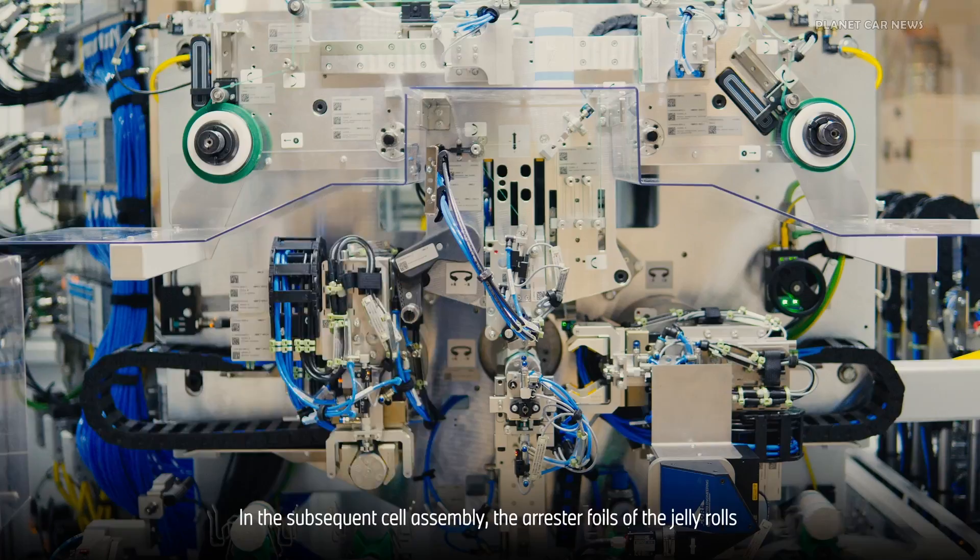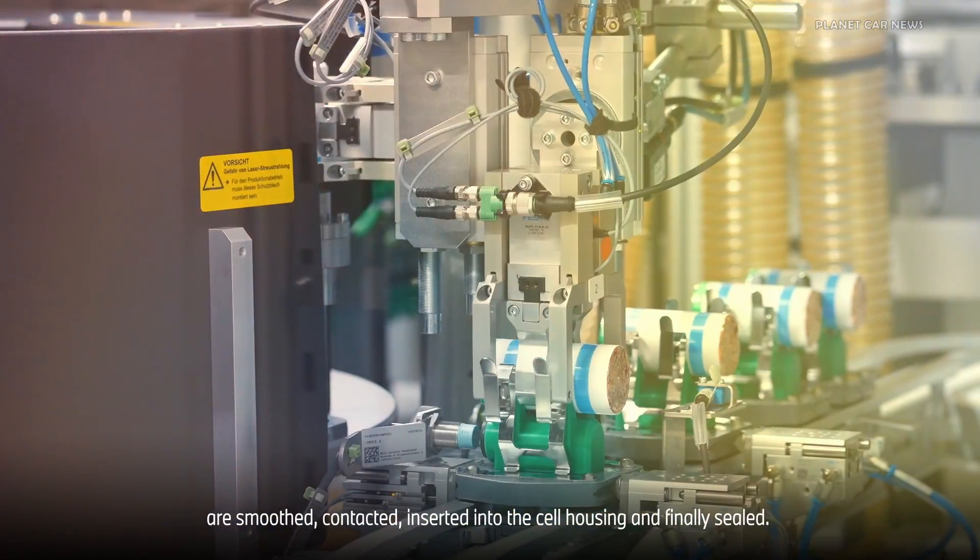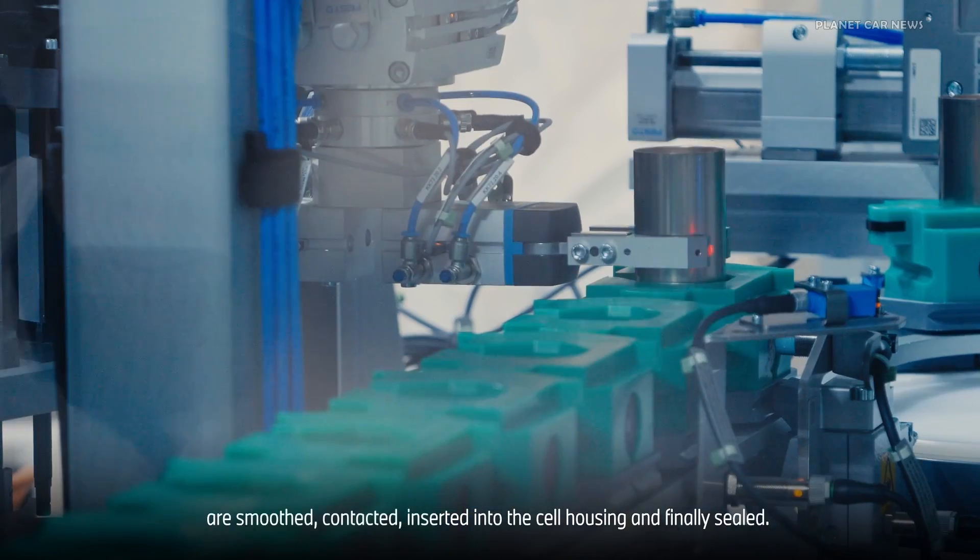In the subsequent cell assembly, the arrestor foils of the jelly rolls are smoothed, contacted, inserted into the cell housing, and finally sealed.